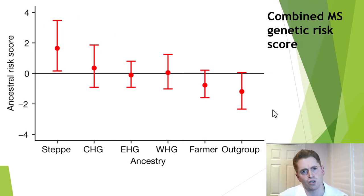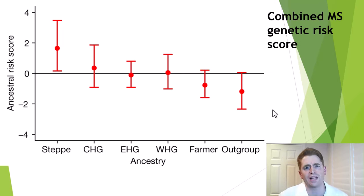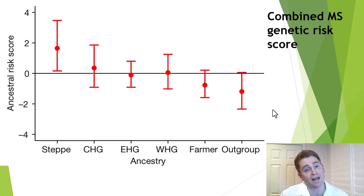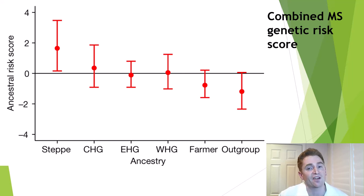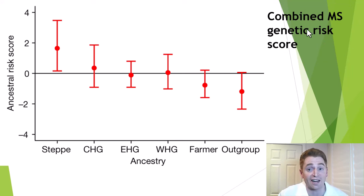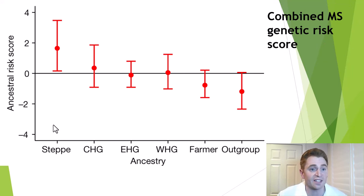They also looked at the totality of genes associated with MS risk — there are actually hundreds of them, many with very minimal association. They created a combined MS genetic risk score, and it was much higher in the steppe population.